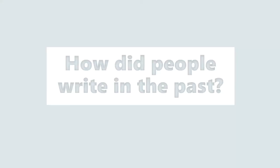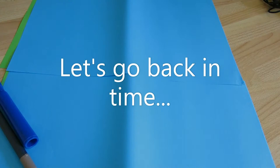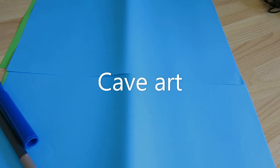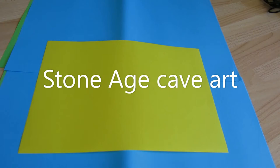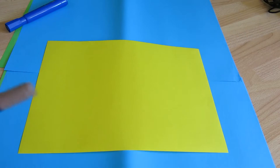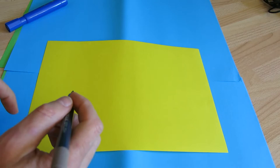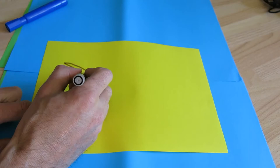I've looked up a little bit of information about how people wrote down things in the past. If you go way back in time, probably the first kind of writing you get or the first kind of telling of a story is cave art, cave paintings. Here's my yellow paper. If you look up Stone Age cave art, it's not just animals, it's actually things happening. That actually means something. Let's have a go at some cave art.